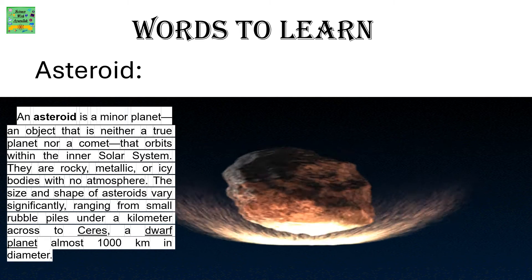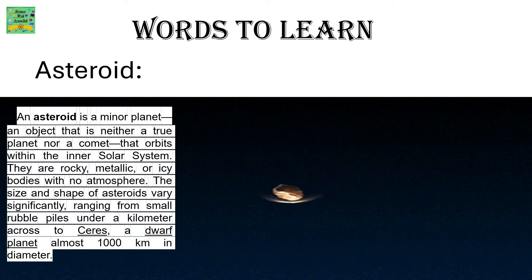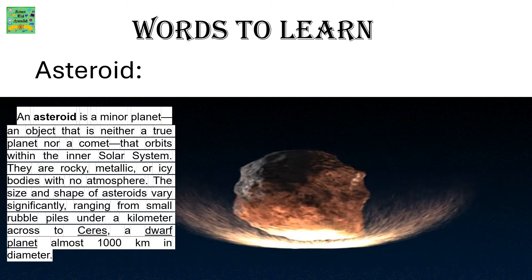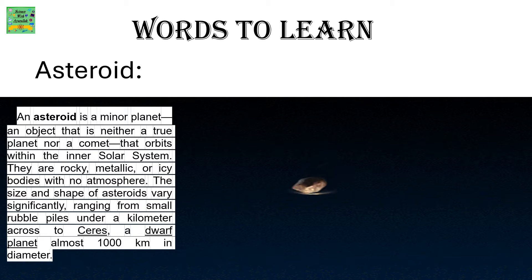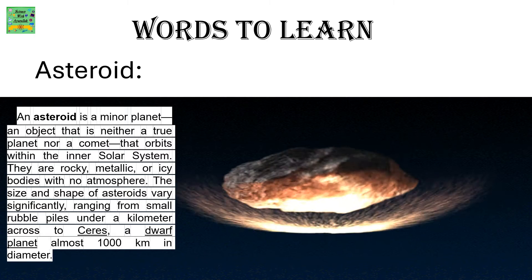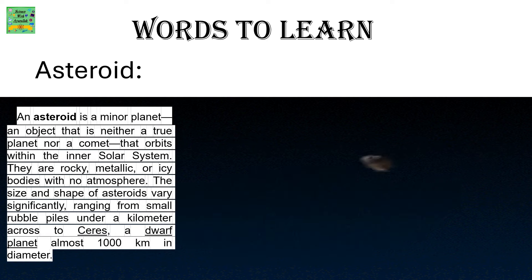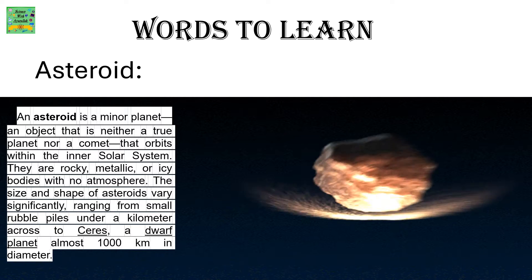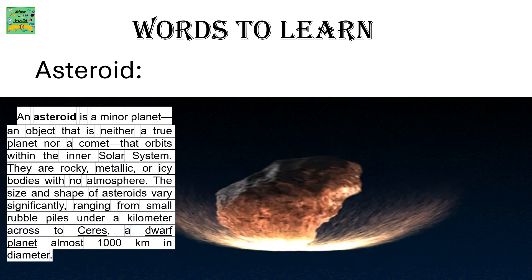Asteroid: An asteroid is a minor planet, an object that is neither a true planet nor a comet that orbits within the inner solar system. They are rocky, metallic, or icy bodies with no atmosphere.